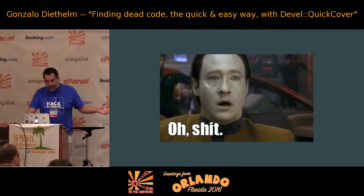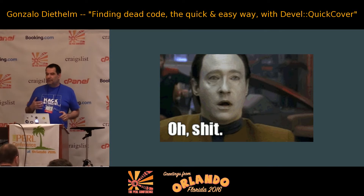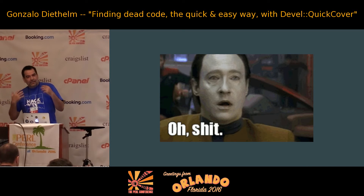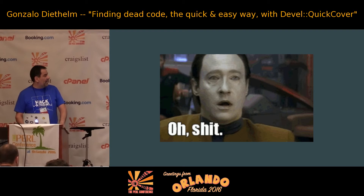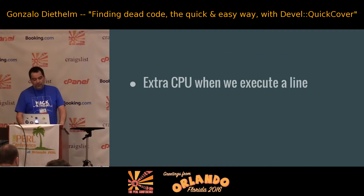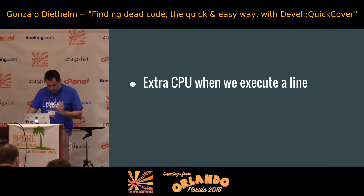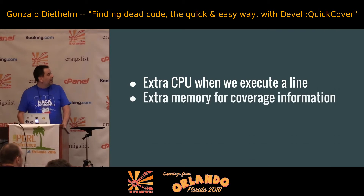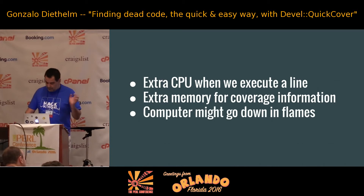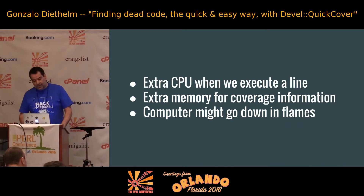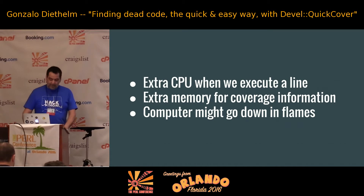So, this could have impacts, right? It's obvious that if you do crazy stuff in your interpreter as you're running the code, bad stuff could happen. So, what do we care for? What should we be looking for beforehand? Extra CPU when we execute a line, extra memory for all the coverage information, and hopefully the computer will not go down in flames. We didn't actually know if this would happen or not - every time you meddle with the Perl internals, you don't know what's going to happen.